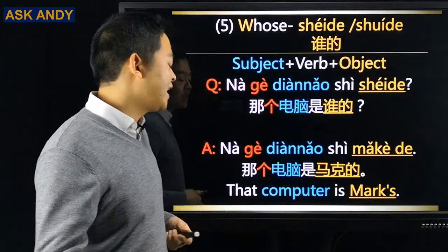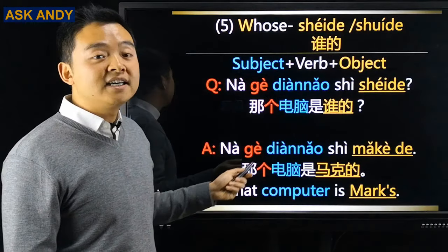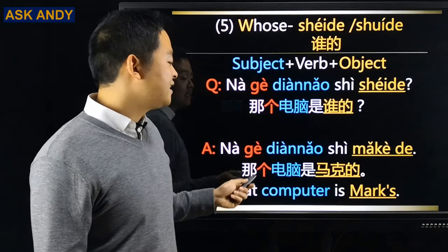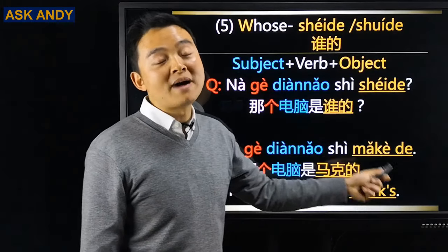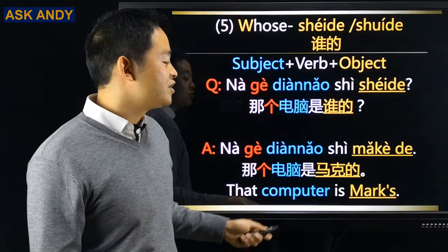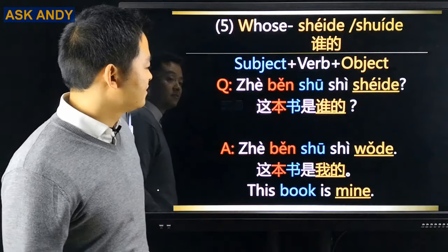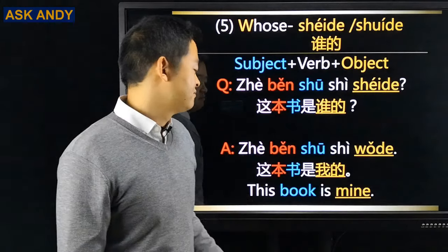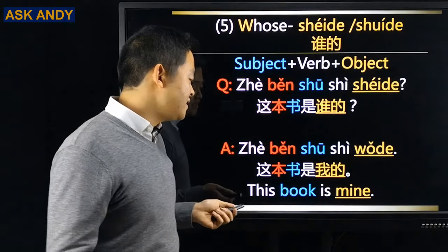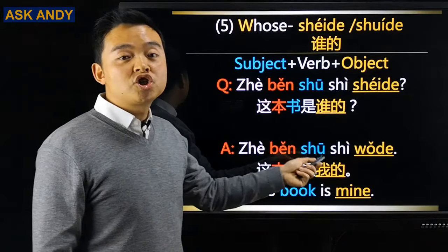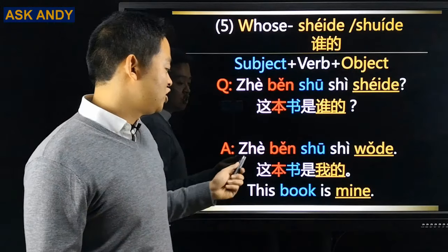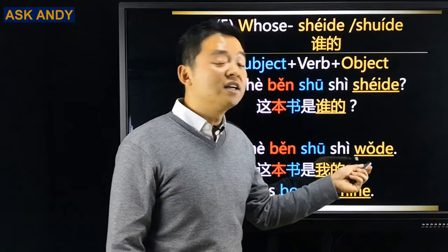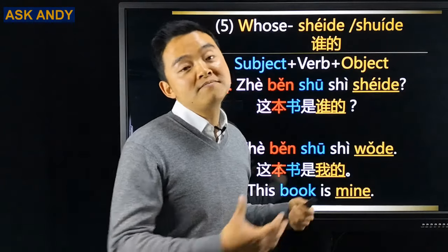那个电脑是谁的? → 那个电脑是马克的 (That computer is Mark's). 这本书是谁的? → 这本书是我的 (This book is mine). Remember, 我的 in Chinese can mean 'my' or 'mine.'